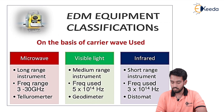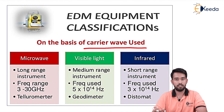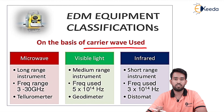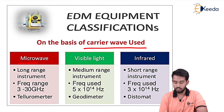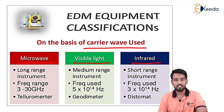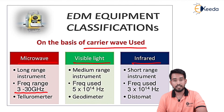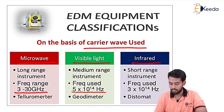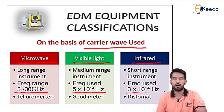The second classification of EDM is based upon the carrier wave used. EDM is basically an instrument which uses electronic waves to measure distance. Depending upon the waves, we classify it as microwave, visible light, and infrared. Microwave instruments are long range with frequency range between 3 to 30 gigahertz. Visible light instruments are medium range with frequency of 5×10^14 hertz. Infrared is used for short range instruments having frequency of 3×10^14 hertz.